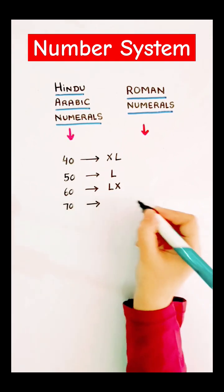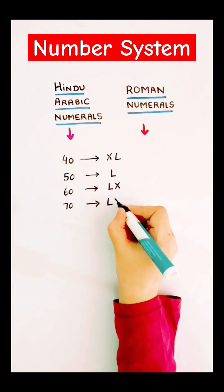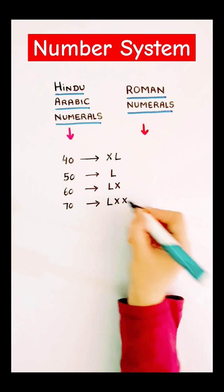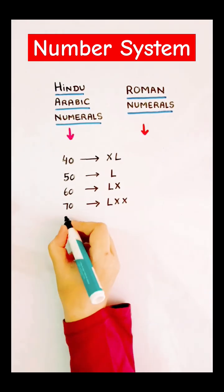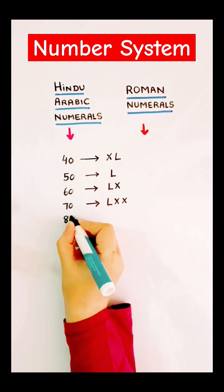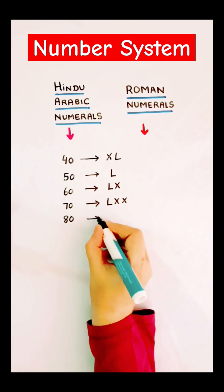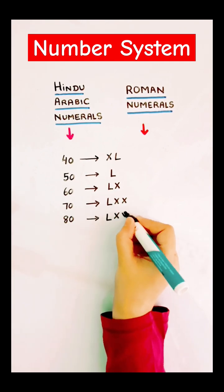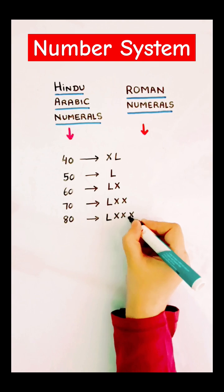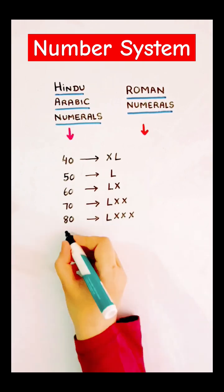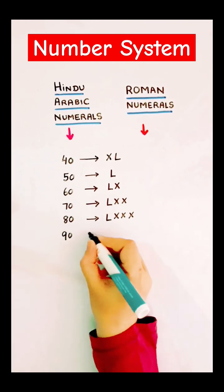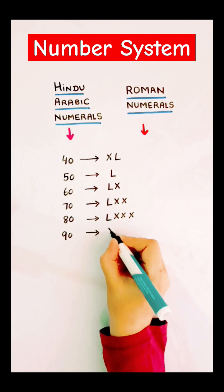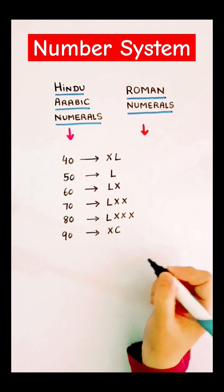The next is 70. For 70, we have to write LXX. And 80. 80 is written like LXXX, just one more X over here. It will make it 80, and 90 which is XC.